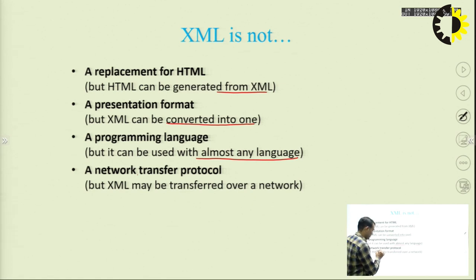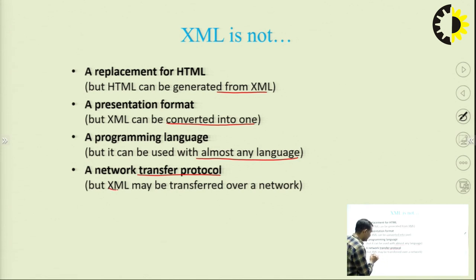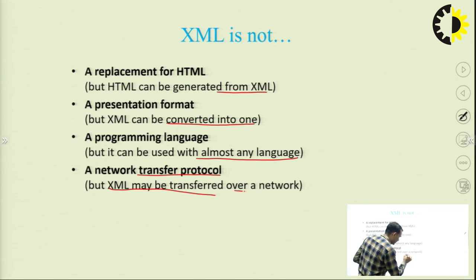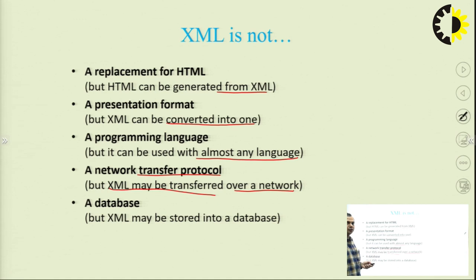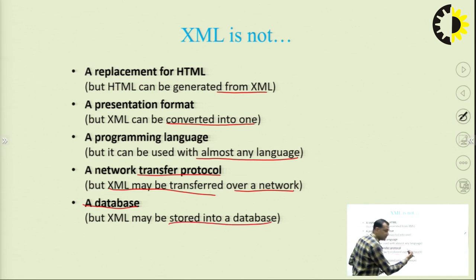XML is not a network transfer protocol, but data can be transferred over a network using XML. It is not a database, but XML data may be stored into a database.